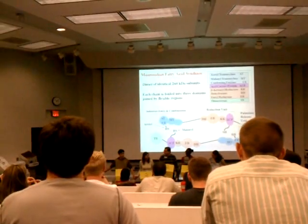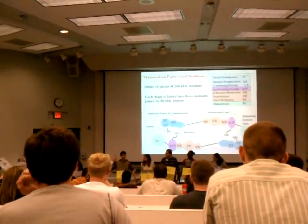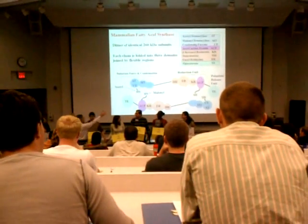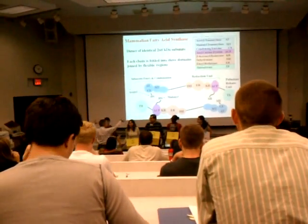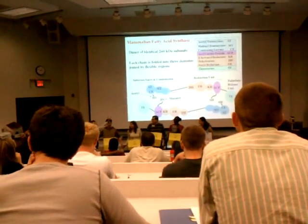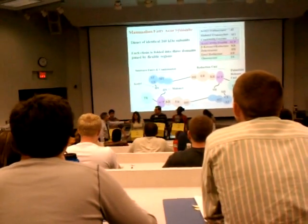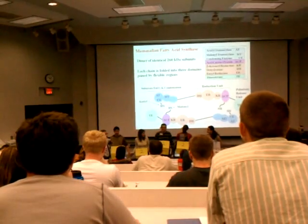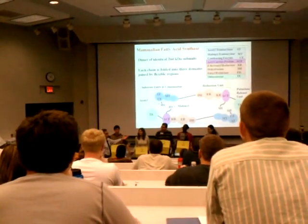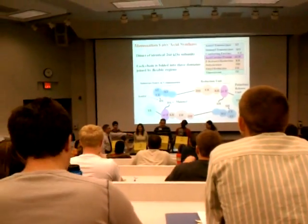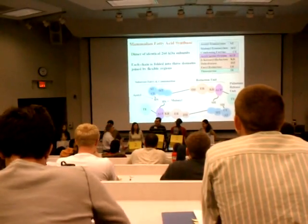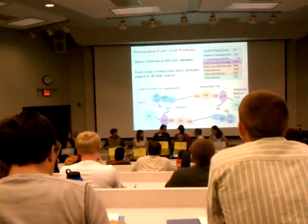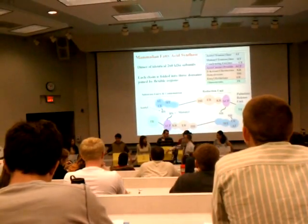Of course, we're also running the reducing module: we do the ketoacyl reductase, the dehydratase, the enoyl reductase — get rid of the keto group and the hydroxyl group and the double bond. Now they're saturated. So we have an eight-carbon saturated fatty acid. Use your imagination and pretend we did this a bunch more times and we got to 16 carbons. Then ultimately, thioesterase would come in, break that bond, and let the fatty acid go off that track.